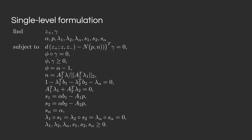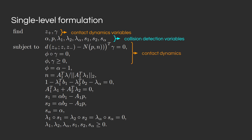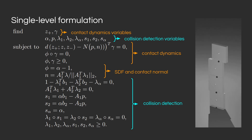To fix these issues, we introduce the single-level formulation. We formulate one single optimization problem that combines the contact dynamics and the collision detection, optimizing over a set of variables containing both contact dynamics variables and collision detection variables, subject to contact dynamics constraints, the expressions for the signed distance function and contact normal, as well as the KKT conditions for the collision detection problem. As shown on the right, we can accurately simulate face-to-face contact between several blocks, simultaneously optimizing contact forces, friction forces, contact point locations, signed distance functions, and contact normals all at once.